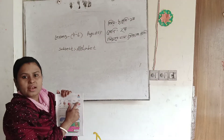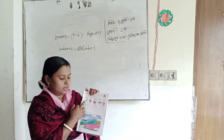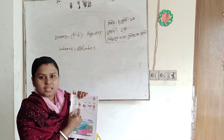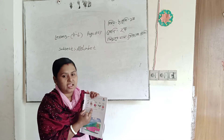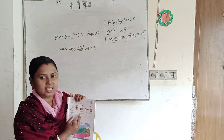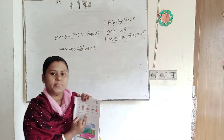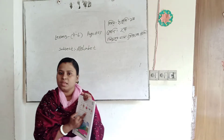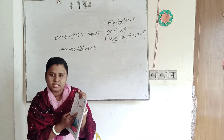We will add the alphabet from A to Z: A, B, C, D, E, F, G, H, I, J, K, L, M, N, O, P, Q, R, S, T, U, V, W, Y, Z.